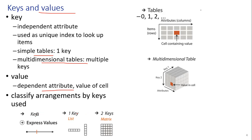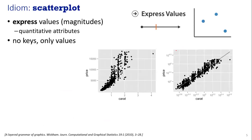We can classify the arrangement by keys used to express values. If we are using only one key, the example is a list. But if we have two keys to compare, that is a matrix. Attributes and items, rows, with cells containing values — and then we have the multidimensional table.